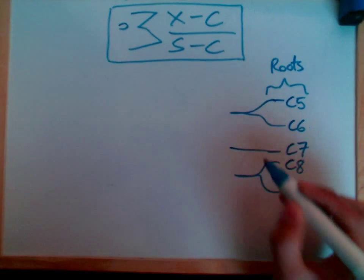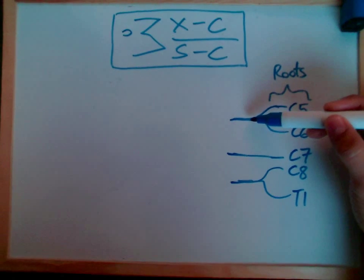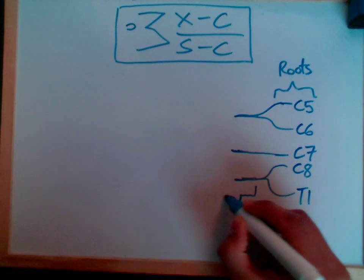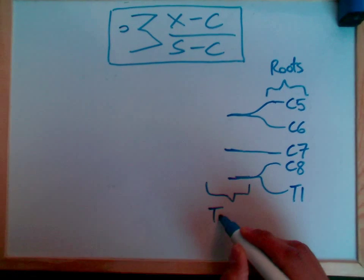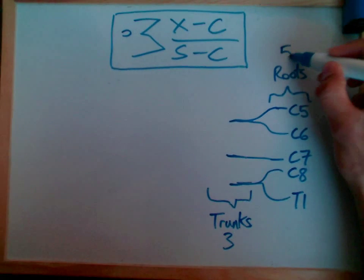These combine in such a way that we have three trunks. The trunks are known as upper, middle and lower. So here we have trunks. We have three trunks and we have five roots.